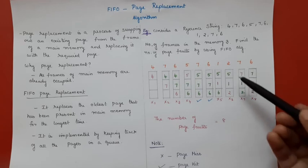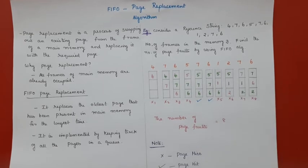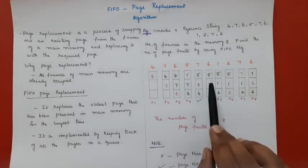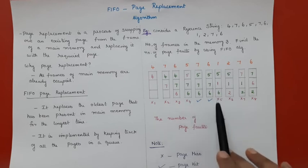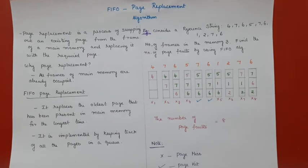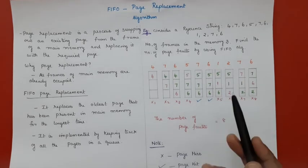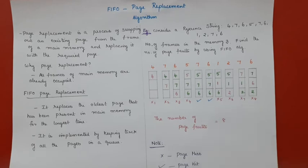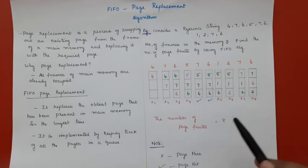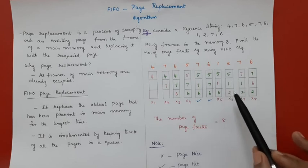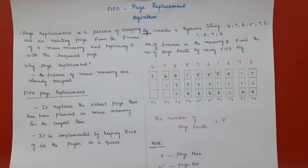The next page is 2 — 2 is not in memory, so I need to swap out a page. Comparing 5, 1, and 6, page 6 is the oldest, so I replace 6 with 2. This is a page fault. The next page is 7 — 7 is not in memory. Comparing 5, 1, and 2, page 5 is the oldest, so I swap out 5 and load 7. This is also a page fault.